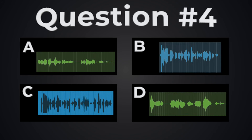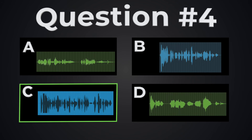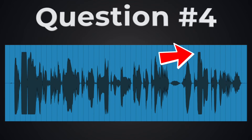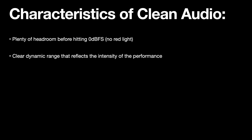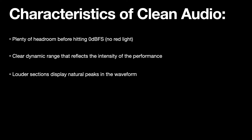So besides the rogue plosives, there are also a few places in letter C that have been squared off from clipping. Let's quickly go over the characteristics of clean audio. We want no background hum or noise. We want it to be as dry as possible, and we also want plenty of headroom before hitting 0 dBFS — that is the absolute limit of digital recording. We don't want to see that red light come on, because that means you've crossed the threshold of what the system can handle and you're no longer accurately recording the performance. So clean audio is going to have a clear dynamic range that reflects the intensity of the performance, with natural peaks. It should sound smooth and easy to listen to.